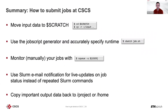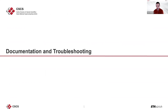In summary: move your input data to scratch, run your jobs on scratch, use the job script generator to create your SLURM script, and submit with sbatch to run on compute nodes. To monitor manually, use 'sq -u $USER' — though email notifications are much more convenient. Last but not least, copy your output data back to project or home after your job, since scratch is not backed up.